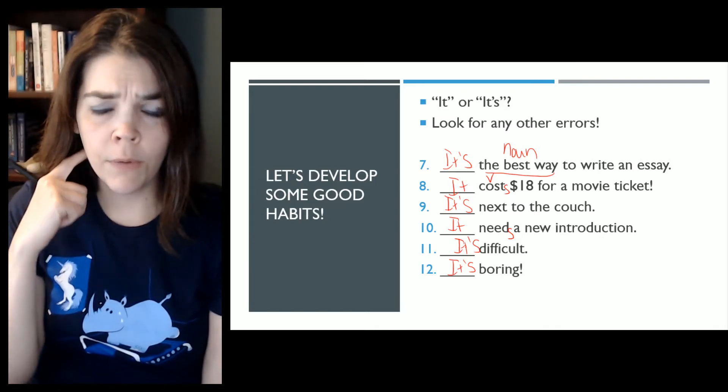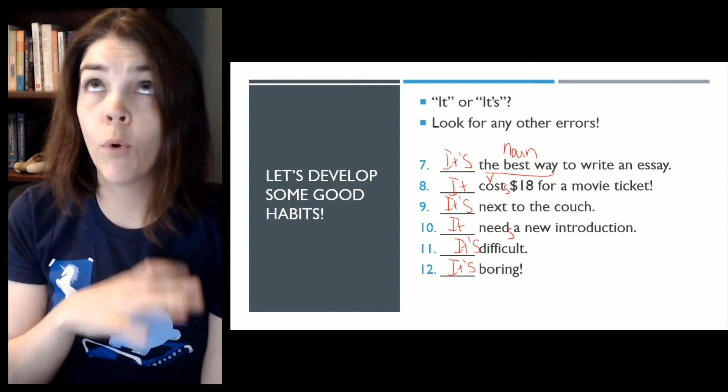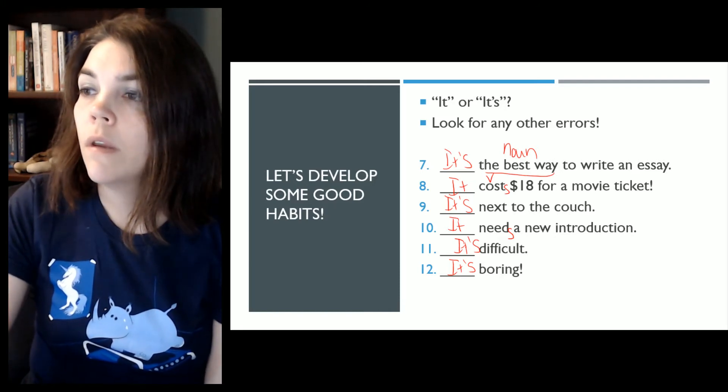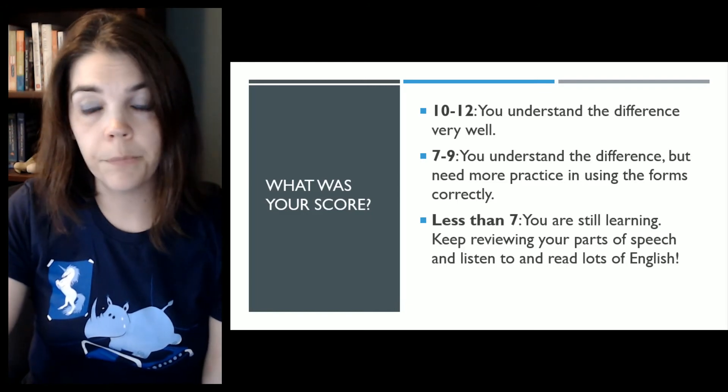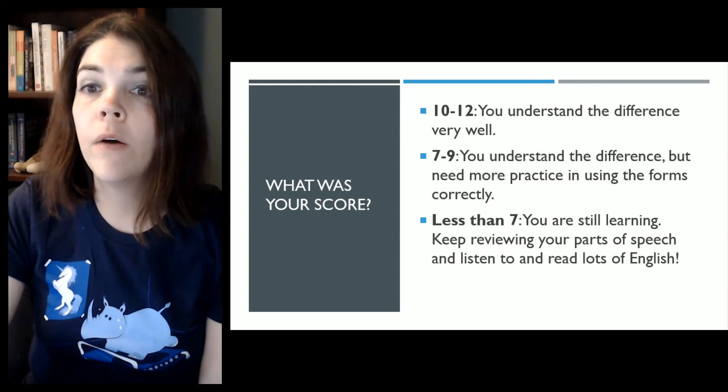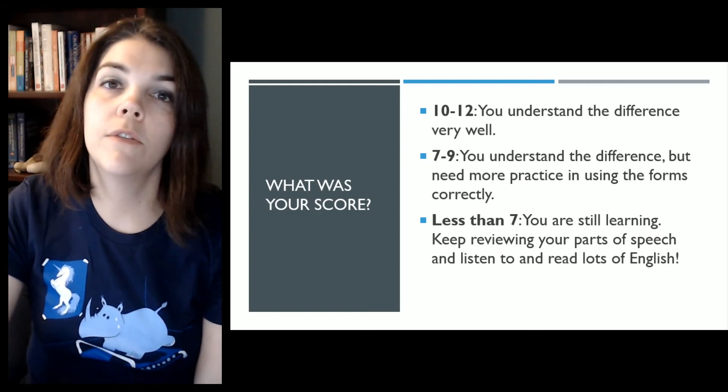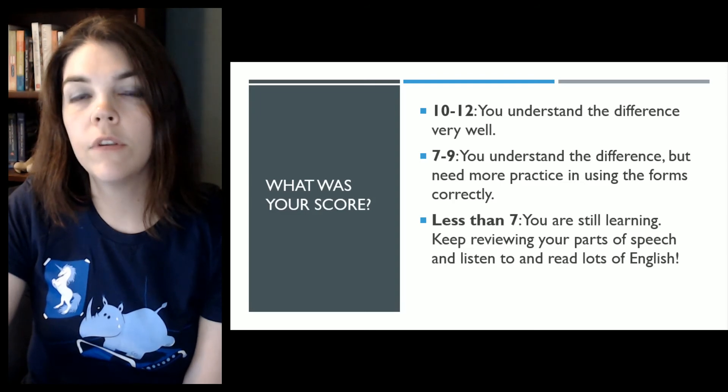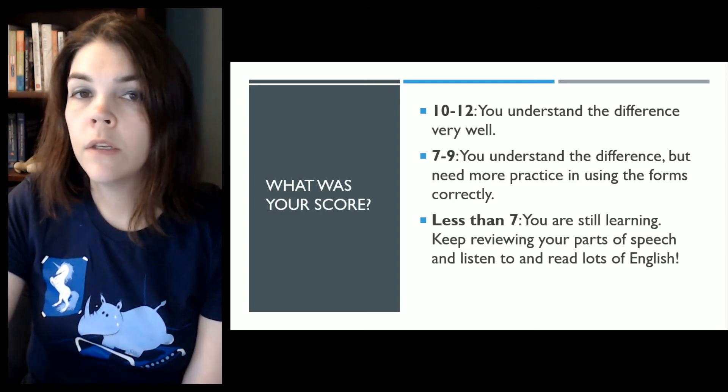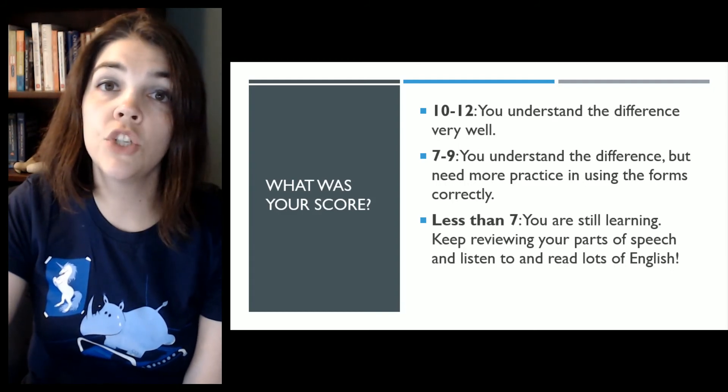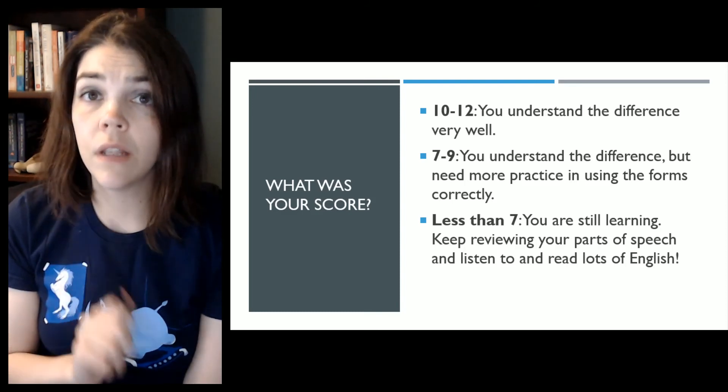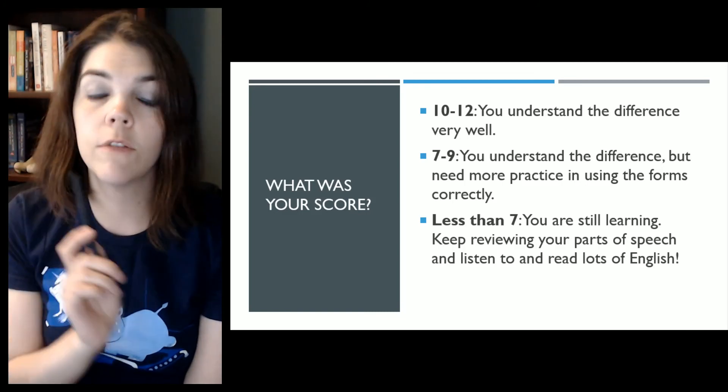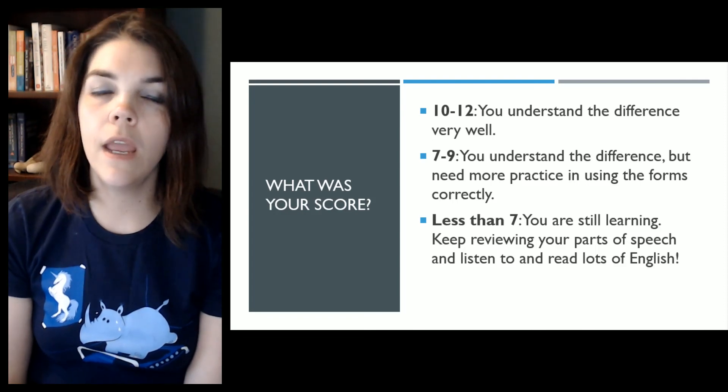That reminds me, we should do a video about the difference between boring and bored because my students confuse that a lot and it makes for a very funny conversation. All right, so tally up your points and how did you do? If you got ten to twelve, you understand the difference pretty well. Seven through nine is you understand the difference, but you need more practice using the forms correctly. And if it's less than seven, don't freak out. You're still learning. Keep reviewing your parts of speech. And I also recommend that you listen to and read lots of English because the more that you see correct, accurate English, the more your brain is going to recognize when there is a problem. All right. Thanks for joining me again today and I'll see you next time.